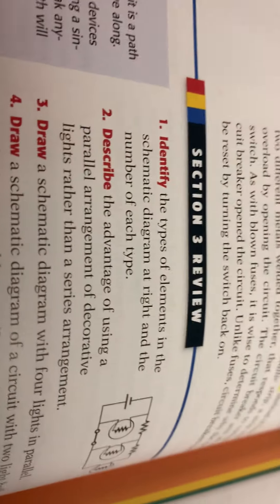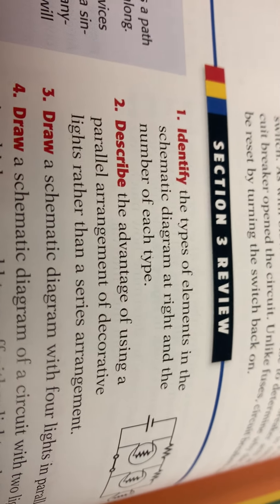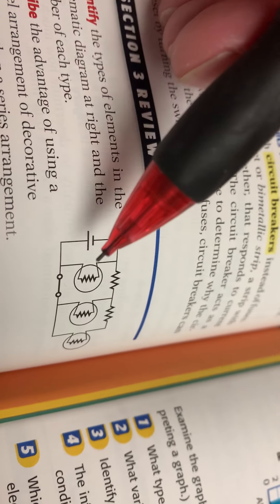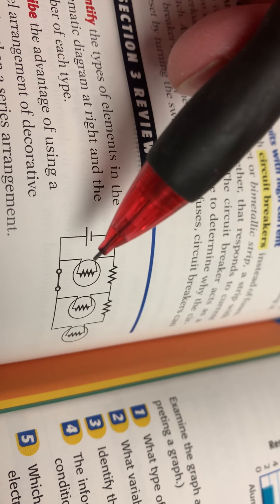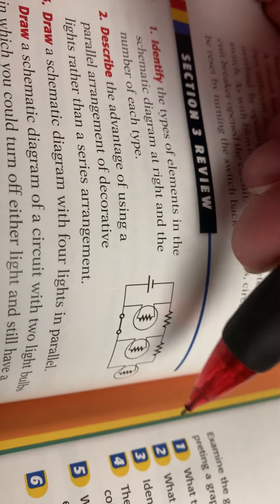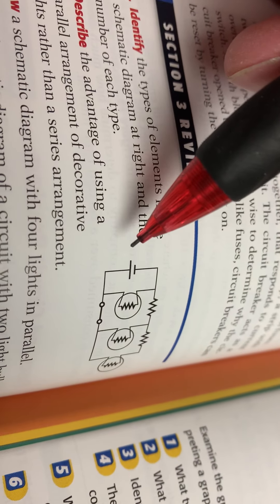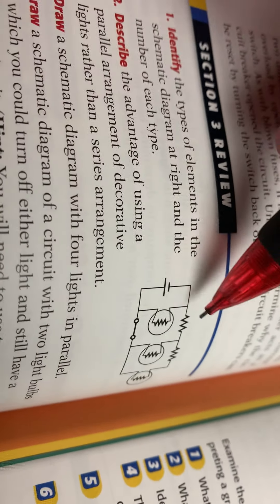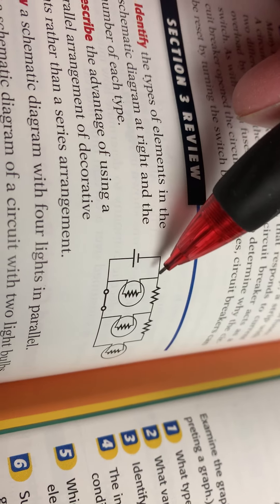All right, got one section left on page 552. Here we go. Identify the types of elements in the schematic diagram of each type. All right, so we got a switch, we got a battery, we got bulbs, there's three light bulbs actually there, and then we have resistors right here, two resistors.